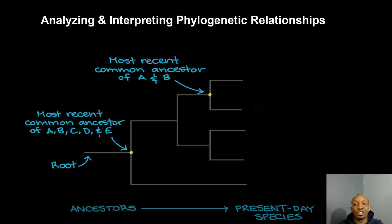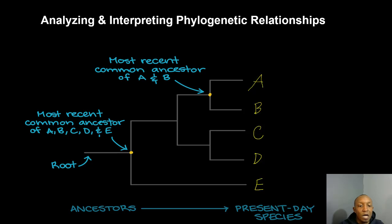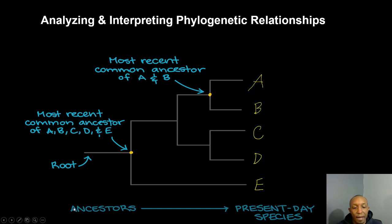Now let's look at analyzing and interpreting phylogenetic relationships. Points A, B, C, D, and E represent our different taxons, and all of these taxons have a common ancestor at this point. This would be called the root of our tree, and here's our timeline as we move along to present day species.